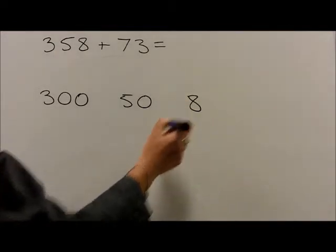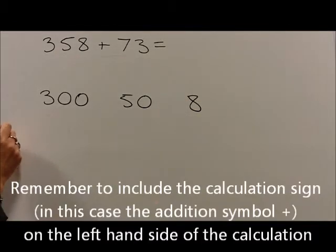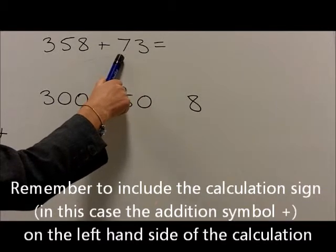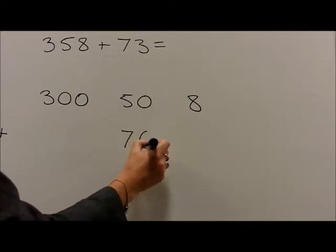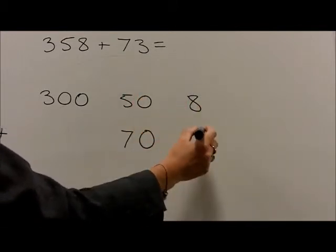This is then added to the 73, which is partitioned into 7 tens, which are 70, and 3 units, which are 3.